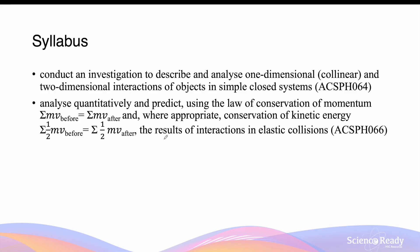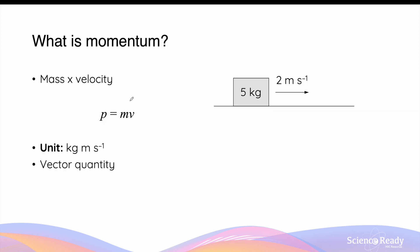Hello everybody. This video is on momentum. In physics, momentum is a vector quantity of a mass in motion. It is given by the mass of the object multiplied by its velocity.